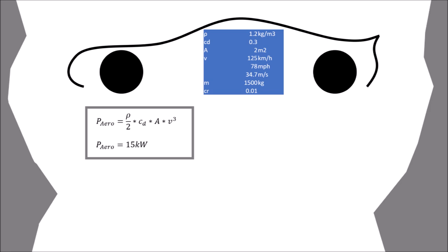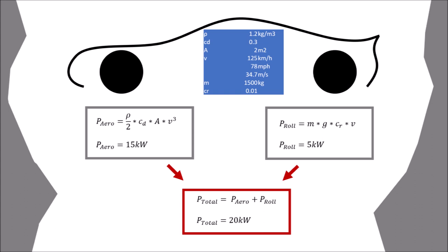We then assume that the weight of the car is 1500 kilograms and the tires have a resistance factor of 0.01. The power required to overcome the rolling resistance is 5 kilowatts. So we need a total of 20 kilowatts to drive this car at 125 km/h constantly.